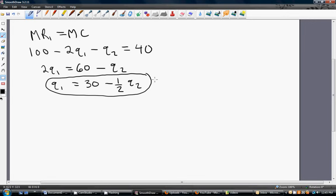This is referred to as firm 1's reaction function. It gives us the best response for firm 1 in terms of output for any output level decided by firm 2.